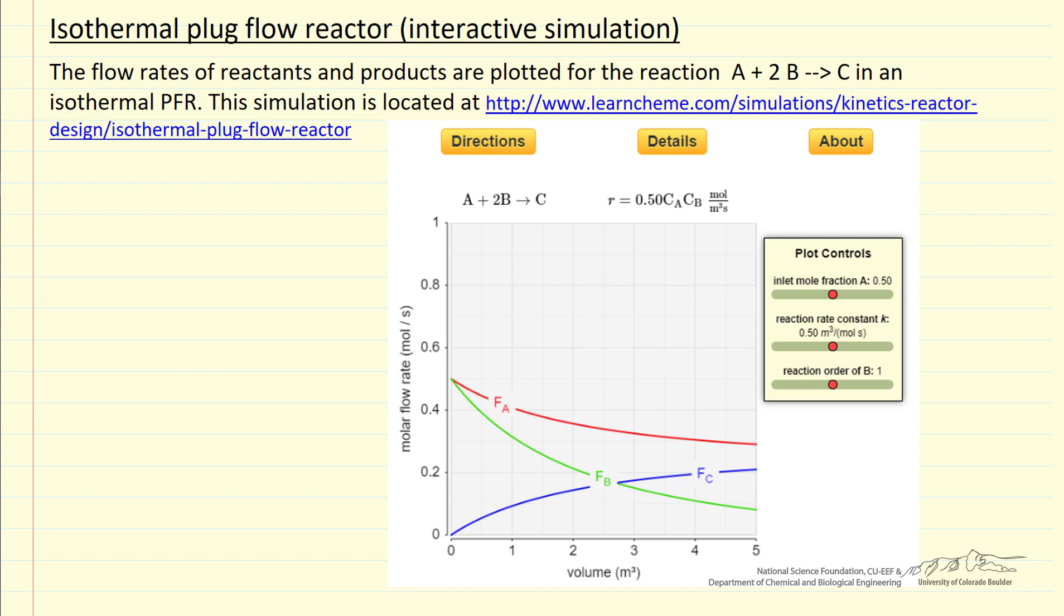And we see of course the A and B mole fractions decrease, B decreases faster because two moles of B react with one mole of A, and so now let's look at the interactive simulation and observe the behavior as we change these parameters with sliders.